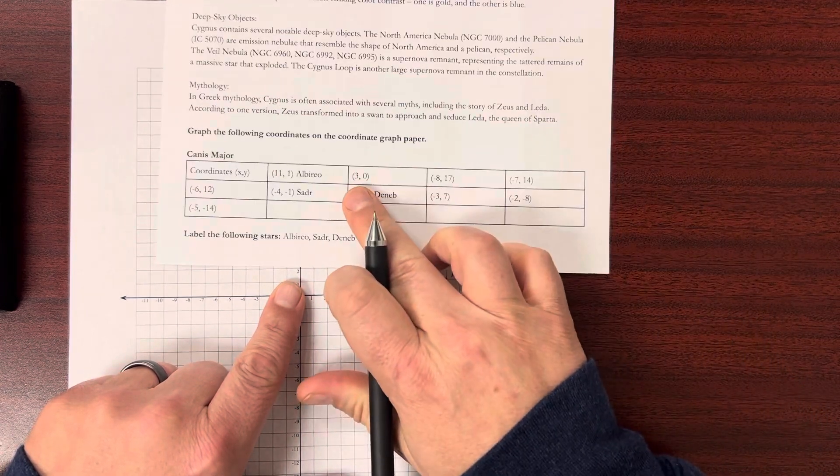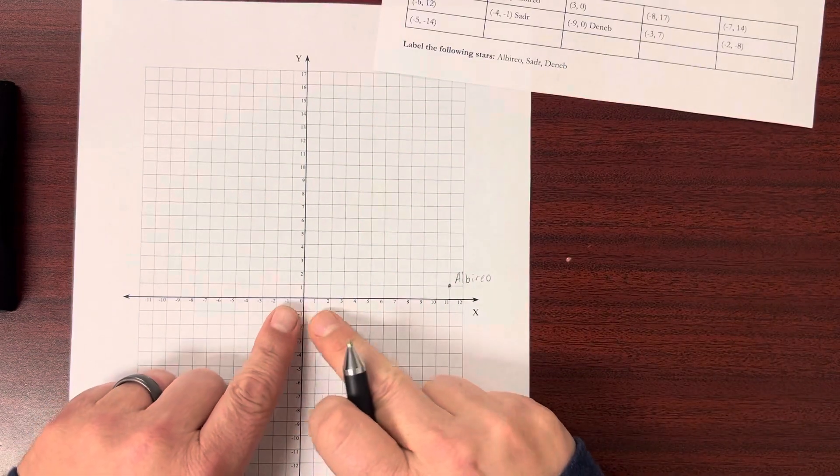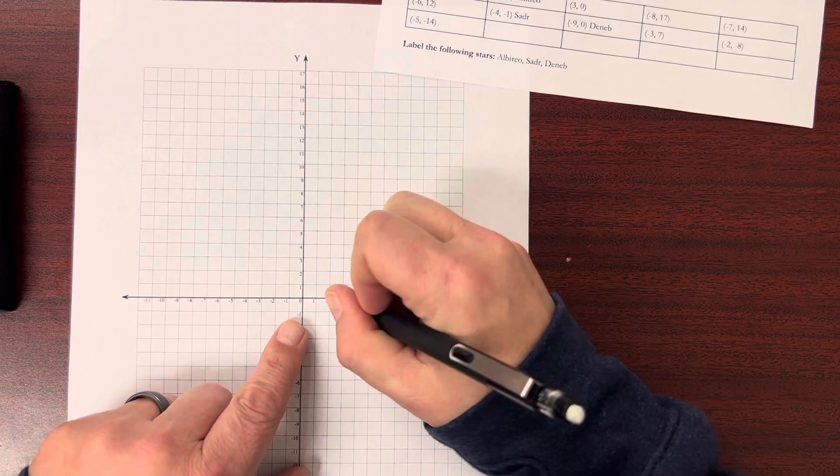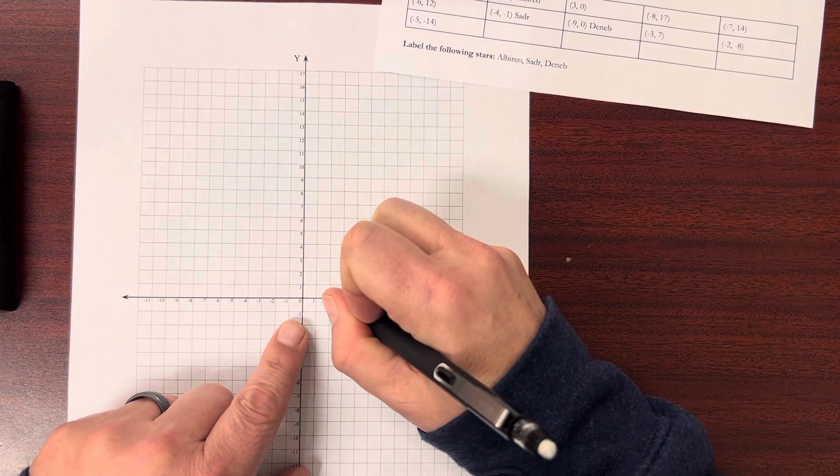And let's go to the next star, 3 and 0. So 3x is here, and 0y is still on that line. So I'm going to go there.